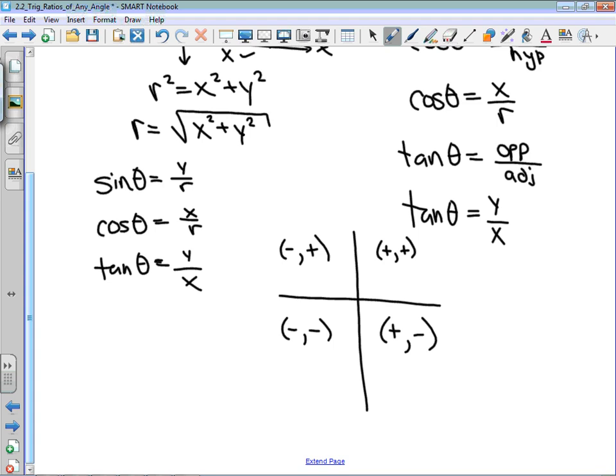Now, the reason why that's so important is because we could actually use that to talk about which trig ratios are positive. In quadrant one, because everything is positive, they are all positive. And we're going to introduce an acronym when we get to this. In quadrant two, because the x is negative, anything that involves the x, so cos theta and tan theta, is going to be negative. So only sine of an angle is positive in the second quadrant.